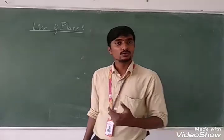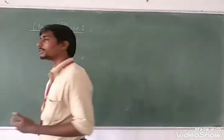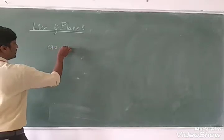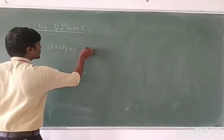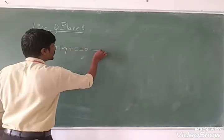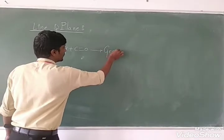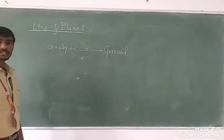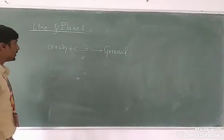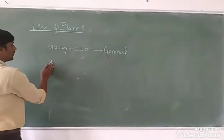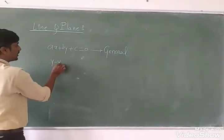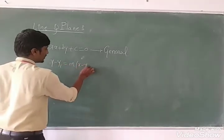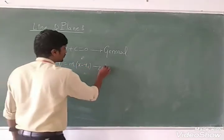We know the different forms of straight lines. We have the general form of a straight line. We also have the point-slope form: y minus y₁ equals m times (x minus x₁).